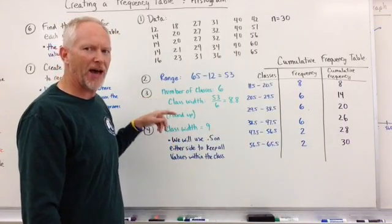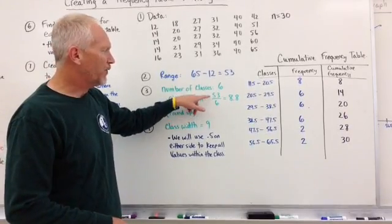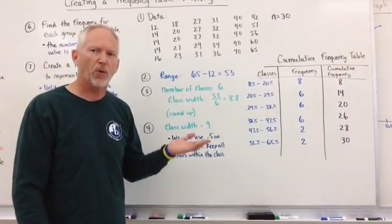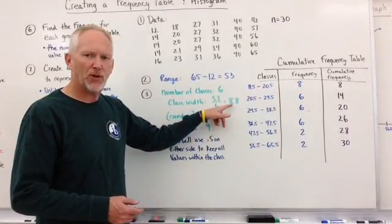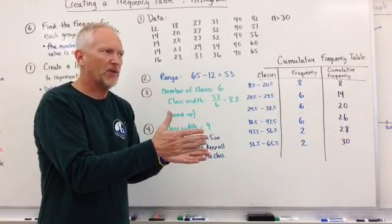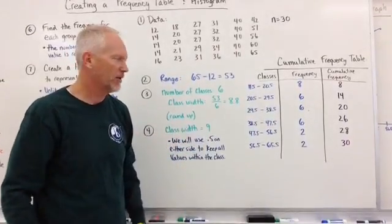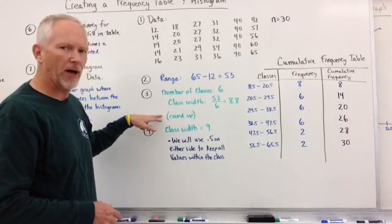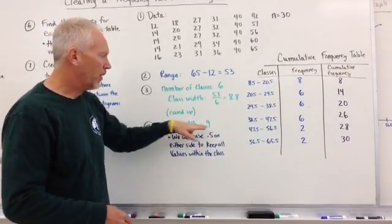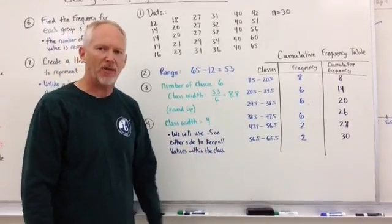We have to decide the number of classes. Now, in this case, I decided to create six classes of information. And so subsequently, the class width is 53 divided by six, and that is 8.8. Now, normally with these, when you get a fraction, you want to round up. Even if it's at 8.2, I would probably round up to nine because that's the next whole number. It keeps you from having some of the end values not be included in a specific class. This way, all my values will get included in a class without duplication. So we round up. Step four was determine your class width. Because it's 8.8, my class width will be nine. And we will use 0.5 on either side to keep all of the values within the class.